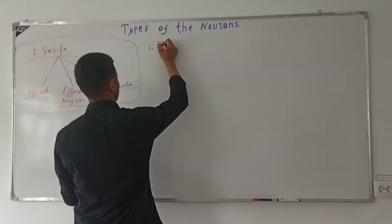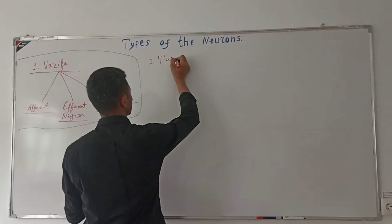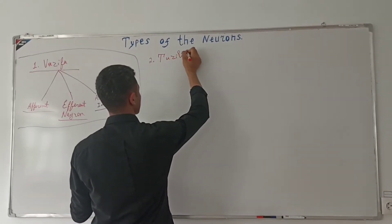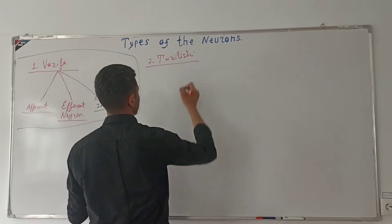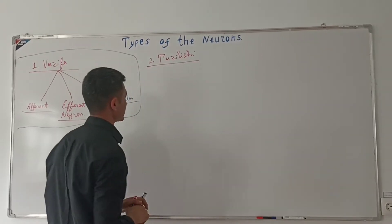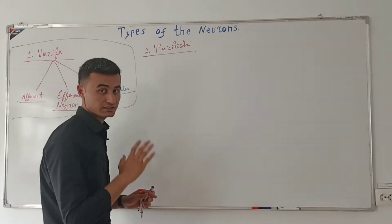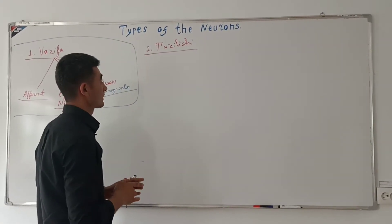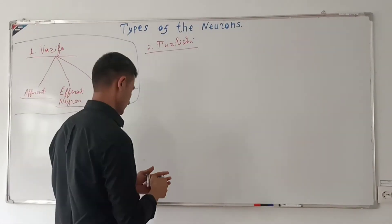Tuzilishi. Neyronning tuzilishi bo'yicha turlarga ajratiladi — bu strukturaviy klassifikatsiya bo'lib, bir necha turlarni o'z ichiga oladi.